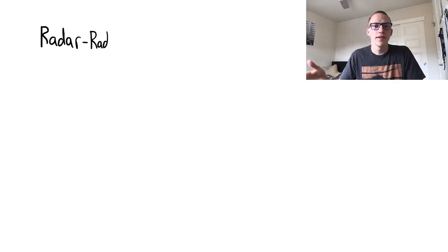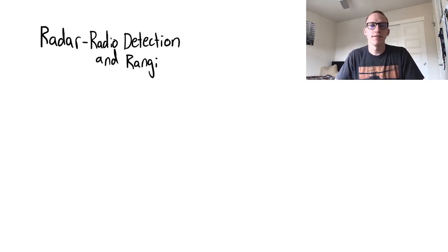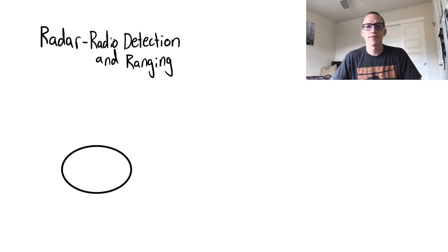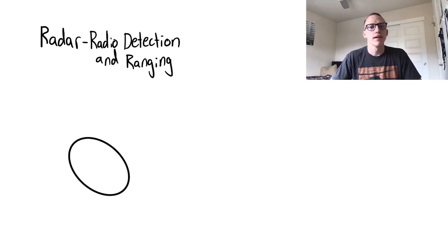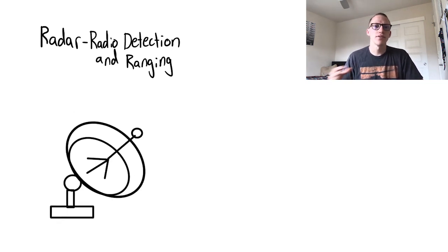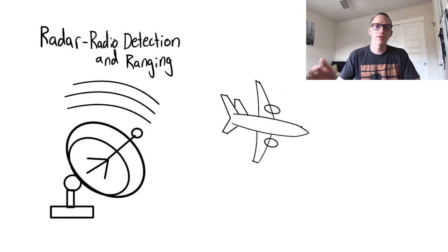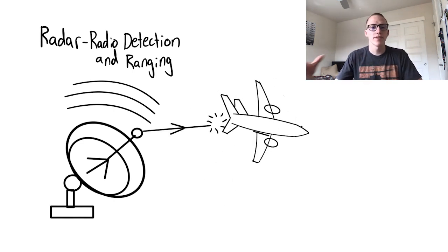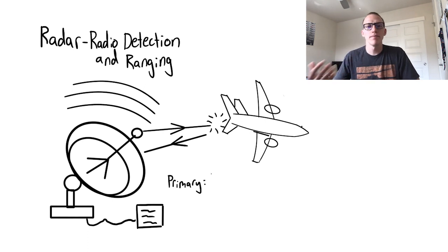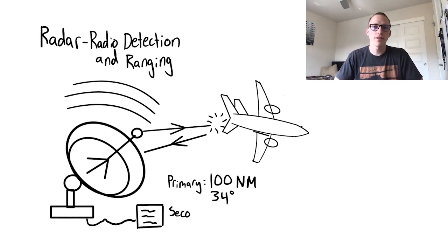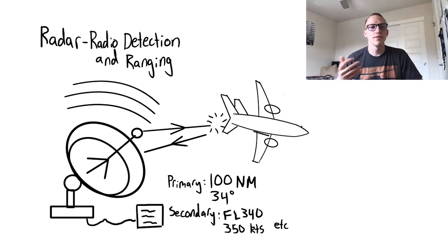Before ADS-B, other forms of tracking existed such as radar. Radar stands for radio detection and ranging. With radar, an antenna transmits electromagnetic waves, and these waves bounce off an object and return to usually the same antenna. A processor then determines properties of the object. Primary properties include distance and location, and secondary functions include altitude, speed, ground track, and more.